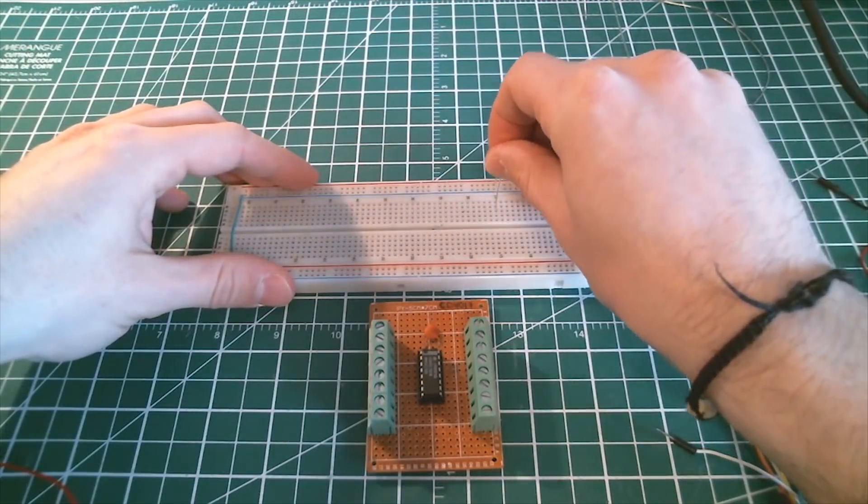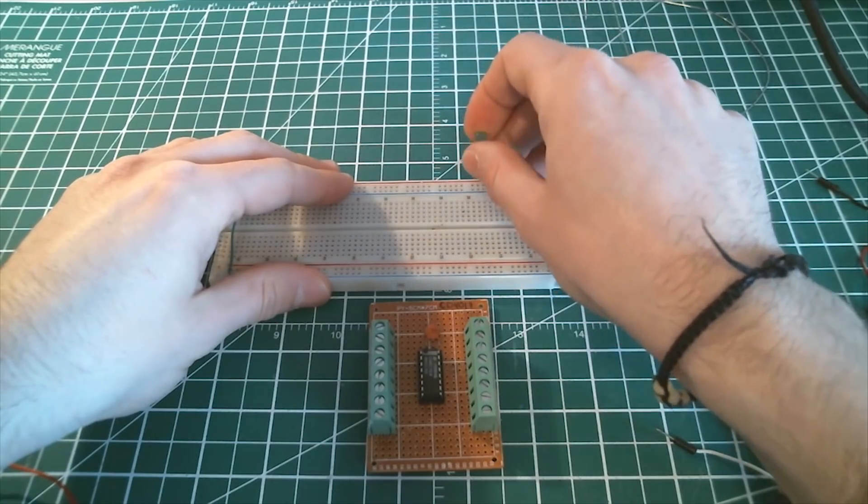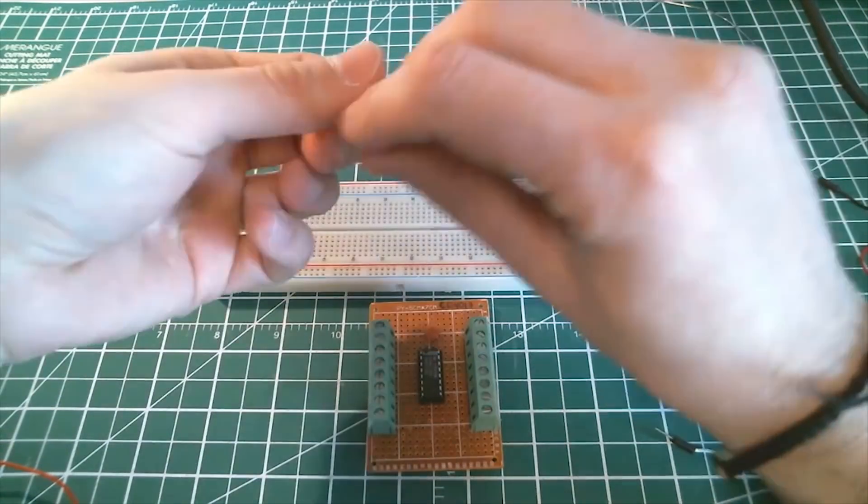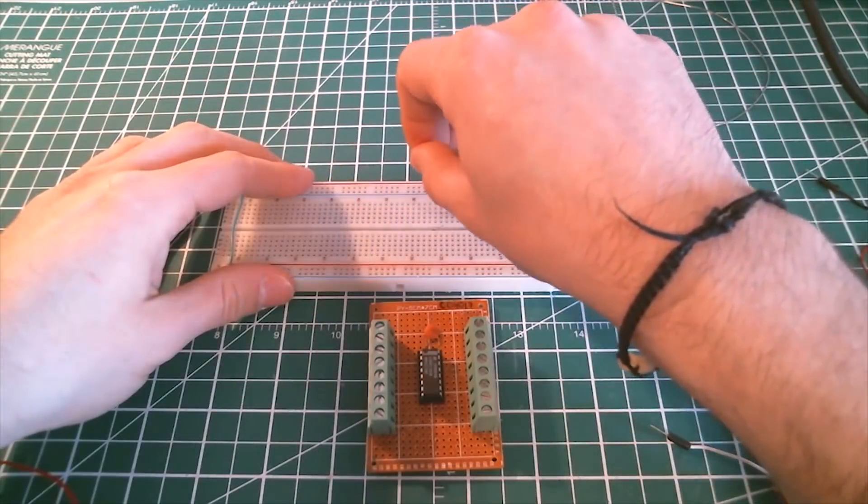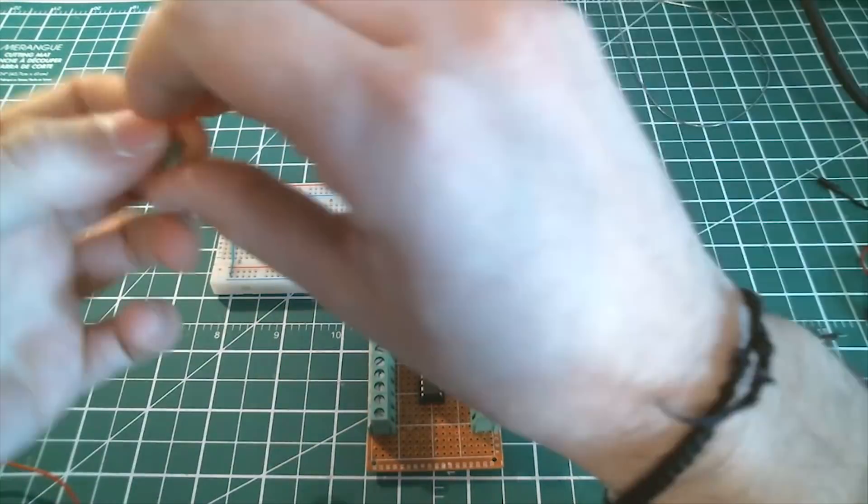What I'm doing is placing 10 LEDs on the breadboard so that all cathodes are in common. Don't forget to add the one-kilohm resistor from cathode to ground.